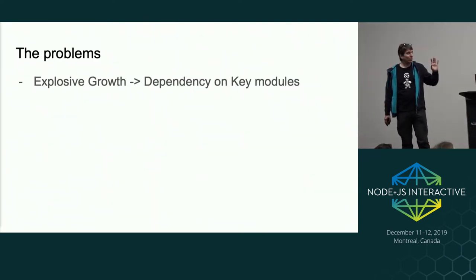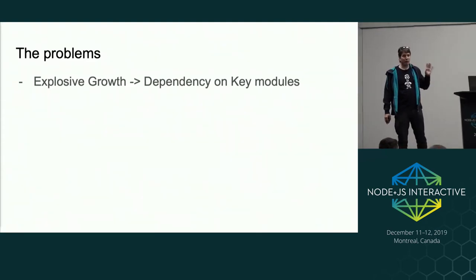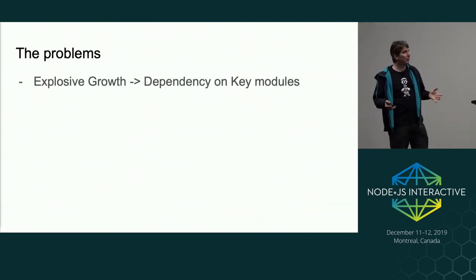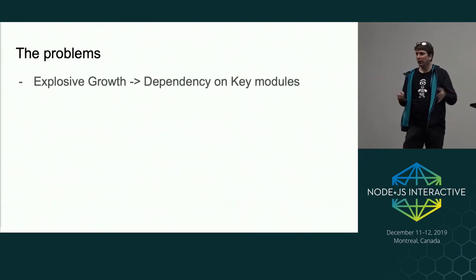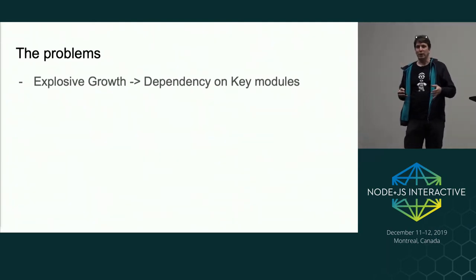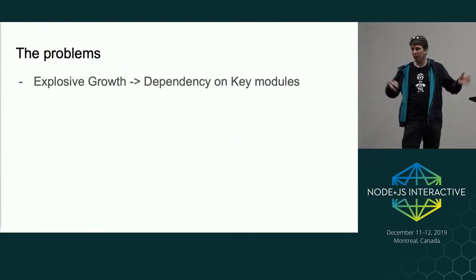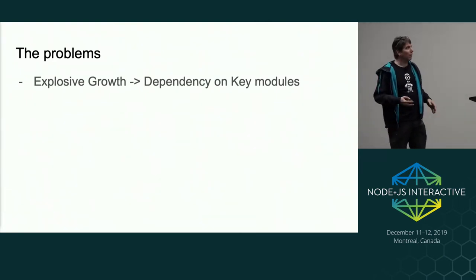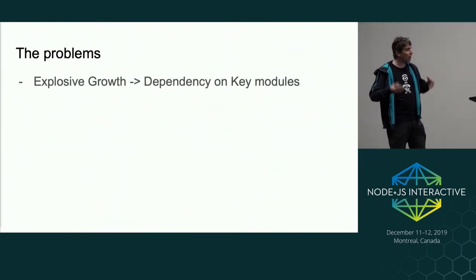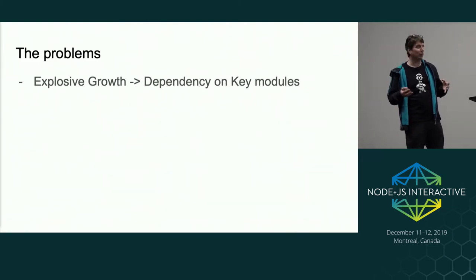Looking at the start, the problem is that we've seen real explosive growth in the use of Node.js, both for personal use and within businesses, and that's really because of all the value provided by modules. There are something like 900,000 modules — every time you do the chart there's more — but there's a smaller subset which get used and reused very heavily. We have a strong dependency on those key modules because of the value they provide to the overall ecosystem.